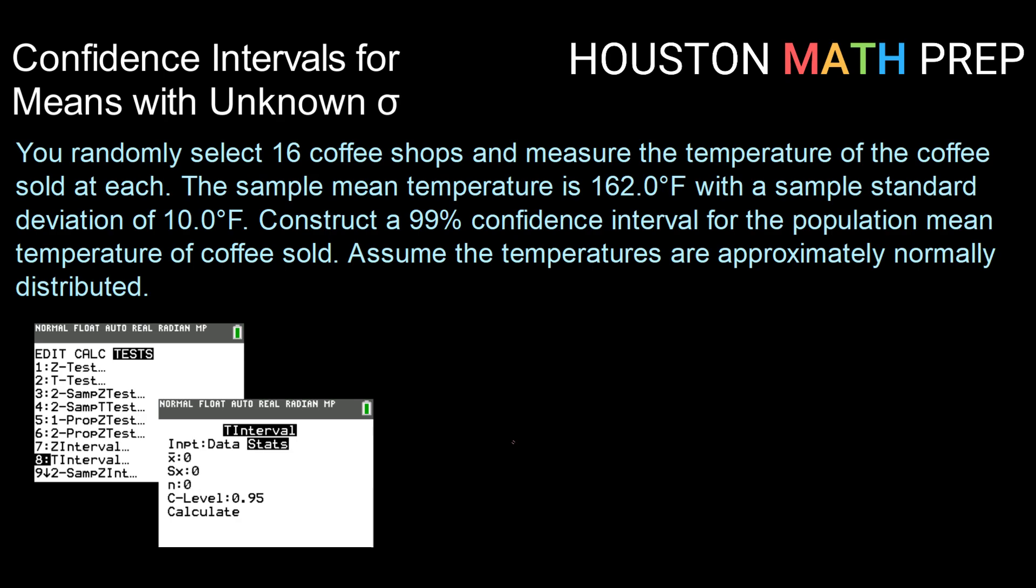Let's say that you randomly select 16 coffee shops and measure the temperature of the coffee sold at each. The sample mean temperature is 162 degrees Fahrenheit with a sample standard deviation of 10 degrees Fahrenheit. Construct a 99% confidence interval for the population mean temperature of coffee sold. Assume that the temperatures are approximately normally distributed.